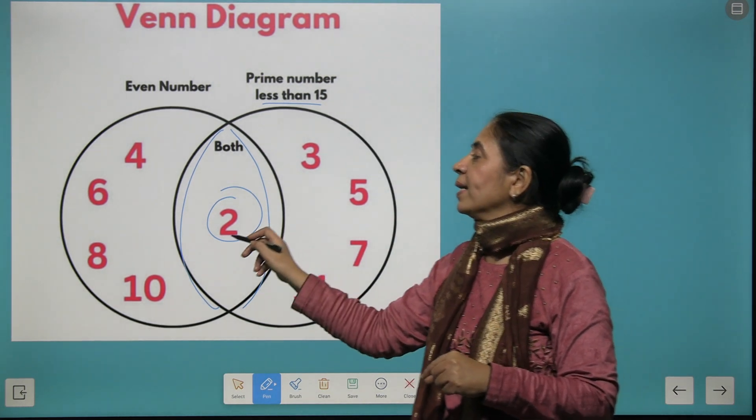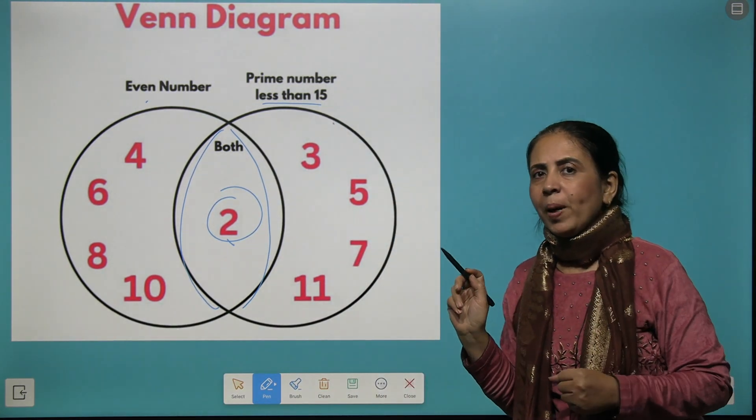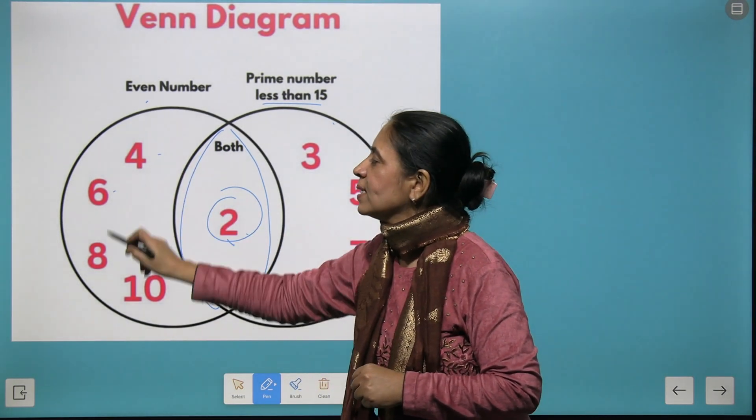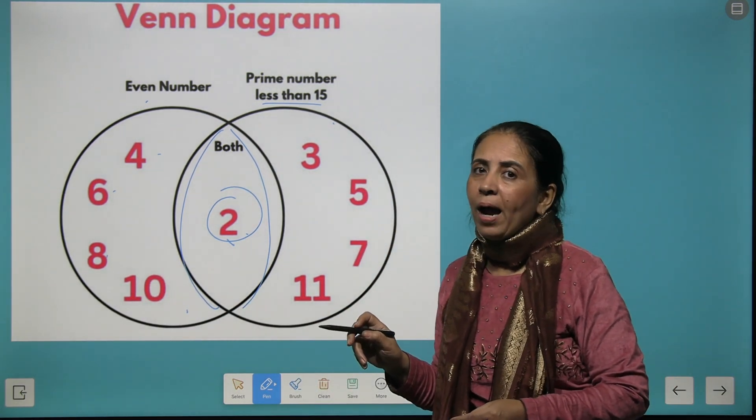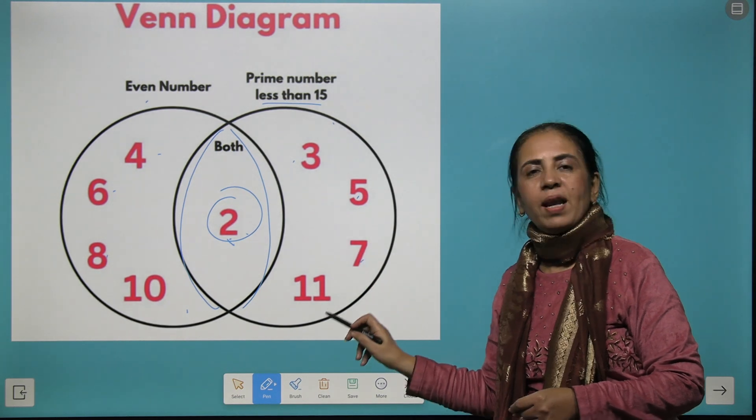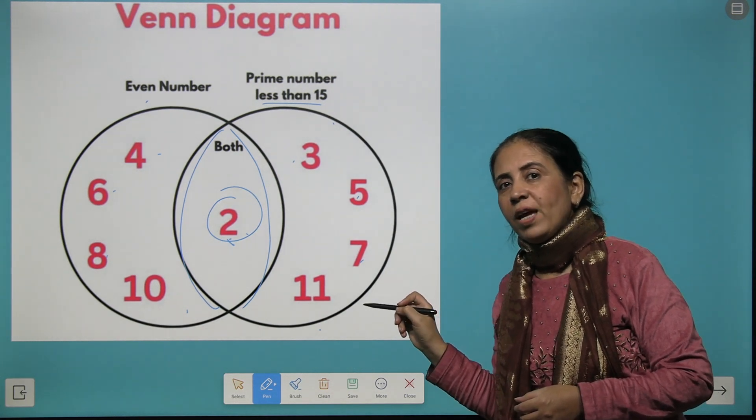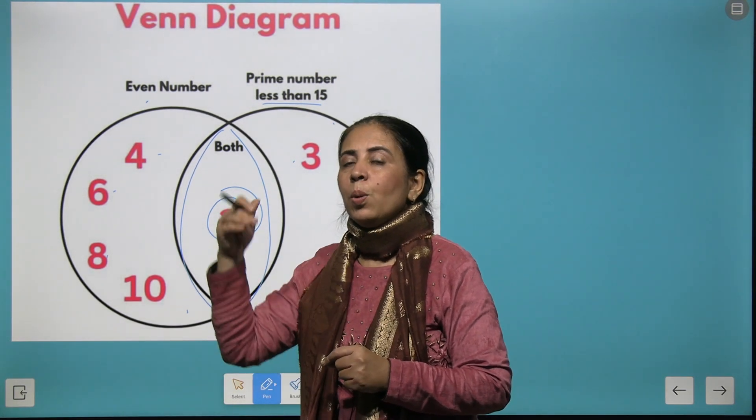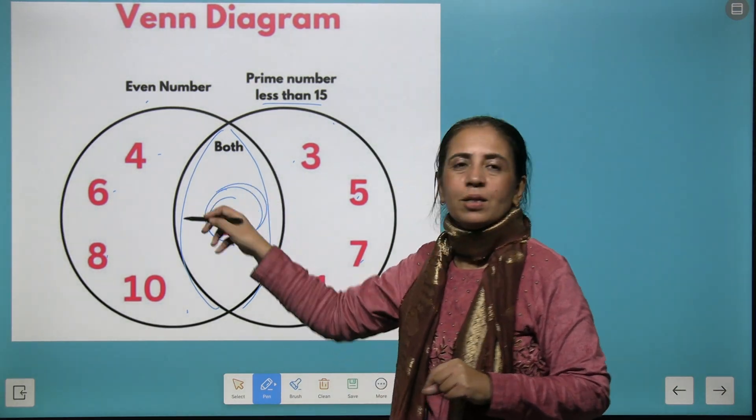What does this indicate? This shows that there exists a number two which is both even and prime. Now if there is a question that how many even numbers are there, we will say two, four, six, eight, ten - we have five even numbers up to 10. And how many prime numbers are there up to 15? We'll count this: two, three, five, seven, and eleven - that means again the answer is five. And if we have a question that how many numbers up to 15 are there which are even as well as prime, so only one number, that is two, is the part of this family.